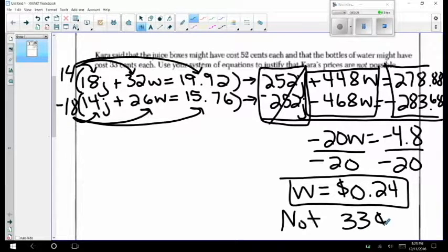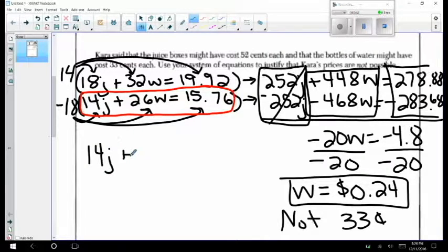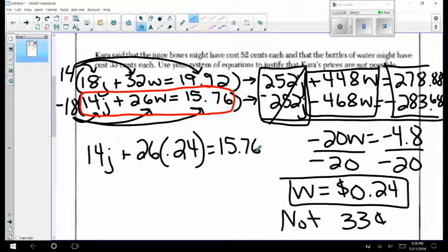Now that we found the price of a water bottle we also need to find the price of a juice box. To do that we will pick one of our original equations. I think I will choose this one. And now that I know the value of W I will use the substitution method to determine J. So we have 14J plus 26W but at this point I will not write W I will write .24 and now using my calculator.